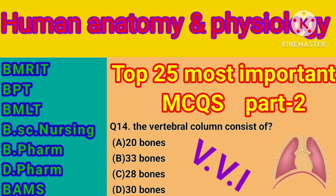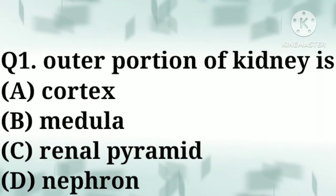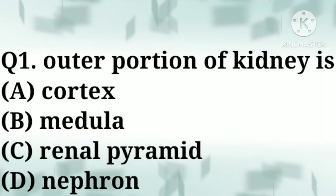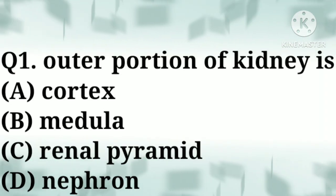Hello friends, how are you all? Welcome to my YouTube channel. Today I am going to share the top 25 most important questions about human anatomy and physiology. So let's start. Question number one: the outer portion of the kidney is — option A: cortex, option B: medulla, option C: renal pyramid, option D: nephron.